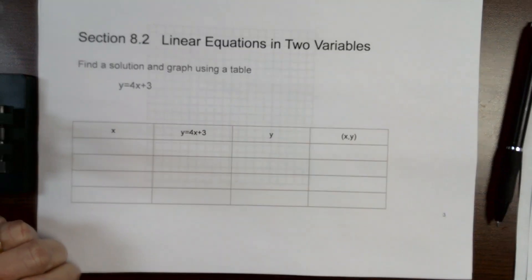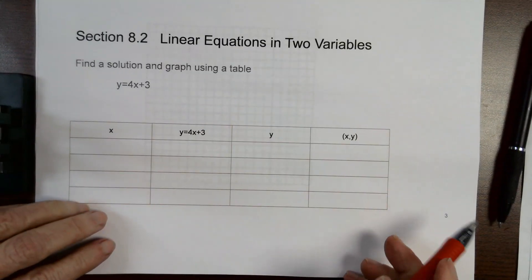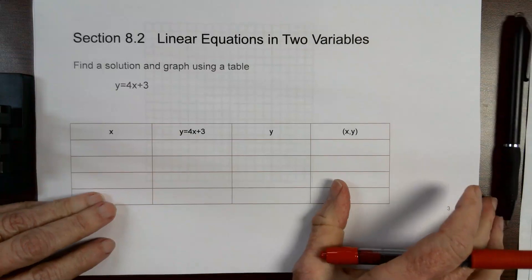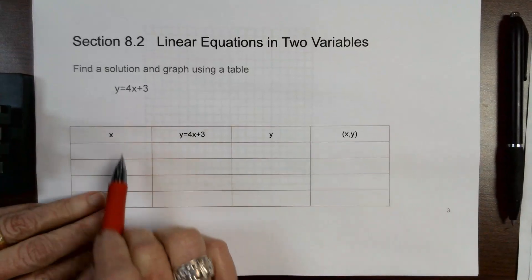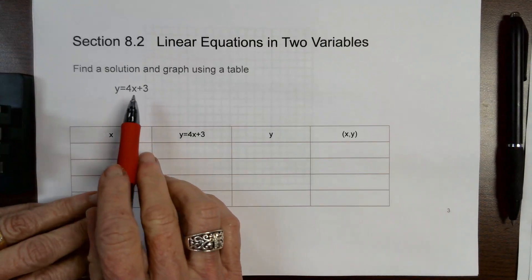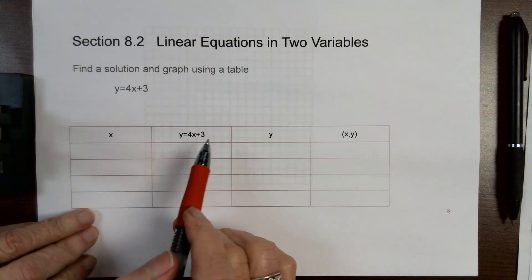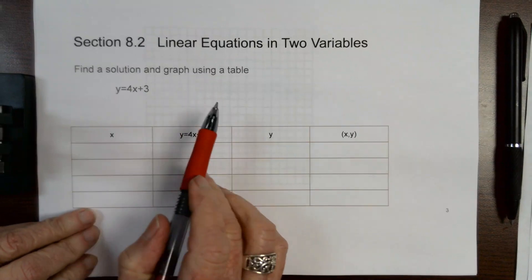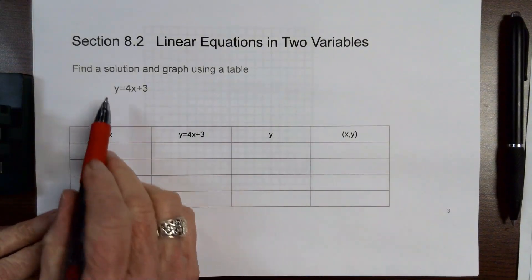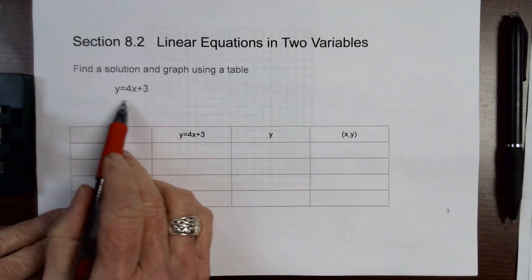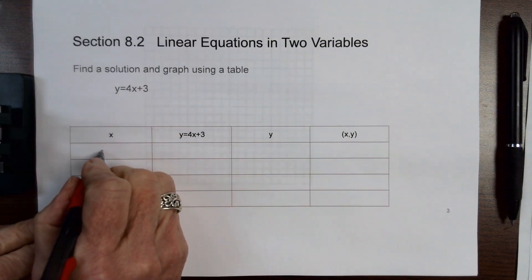Section 8.2 was linear equations in two variables. What you did here is you found a solution and then graphed using a table. Here is my equation. Let me pick some values for x.